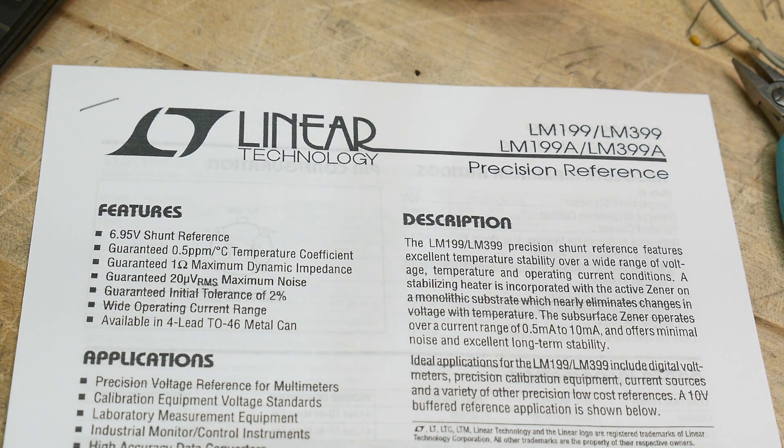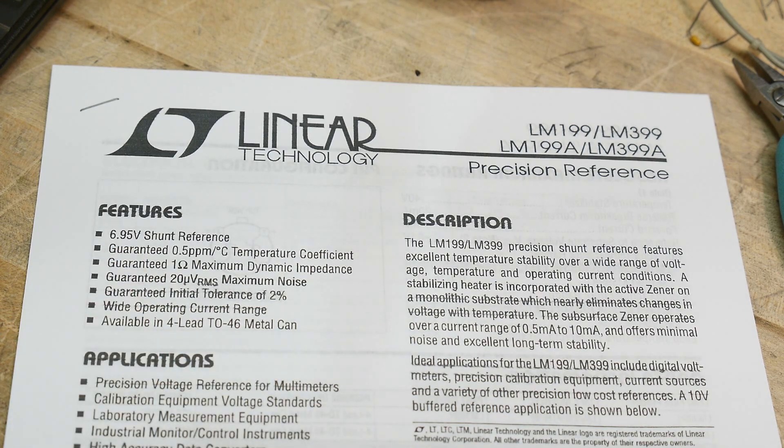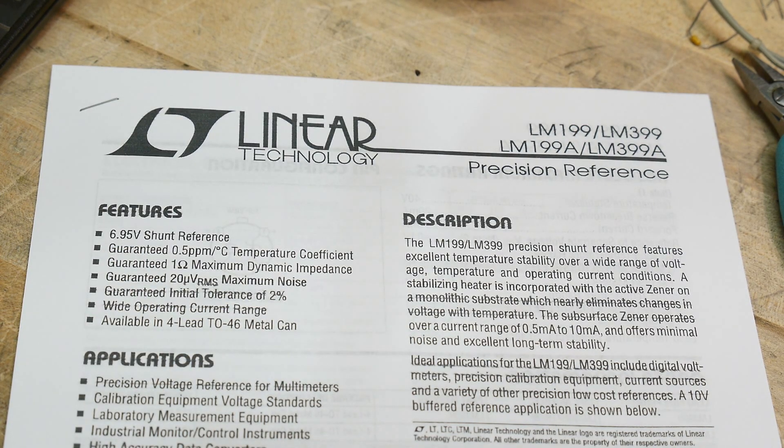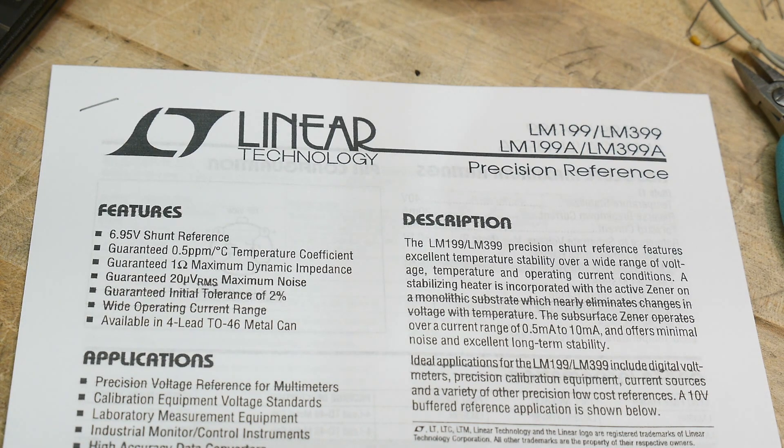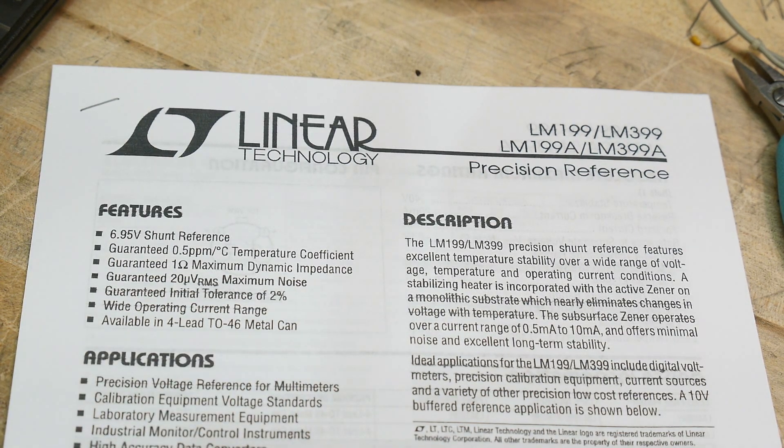So what voltage is it? Must be 10 volts? No, it's 6.95 volts, an odd voltage. That's because they can make the most stable thing with this particular value of zener diode. It's not an absolute reference, it's a relative reference, so you have to calibrate your instruments, but this will then keep it in calibration. It will stay there.